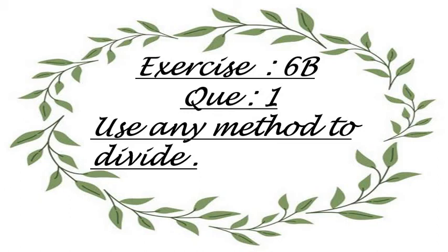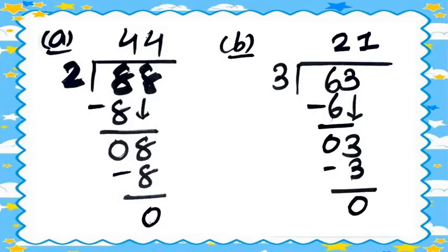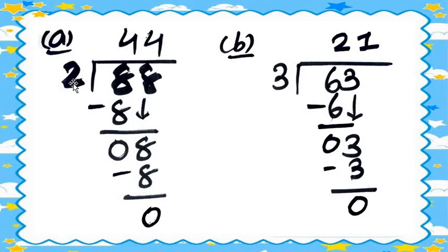Now we start Exercise 6B, question number 1: use any method to divide. Question 1a: 88 divided by 2. We take one digit at a time. In the table of 2, 8 will come — two fours are 8. So 8 minus 8 equals zero. Then we bring down the next 8.